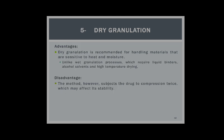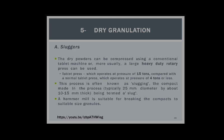Advantage of dry granulation: it is recommended for materials sensitive to heat and moisture. However, the method subjects the drug to compression twice, which may affect its stability. The dry powder can be compressed using a conventional tablet machine or a large heavy-duty rotary press — this process is known as slugging. A 25 mm diameter hammer mill is suitable for breaking the compacts into granules of suitable size.